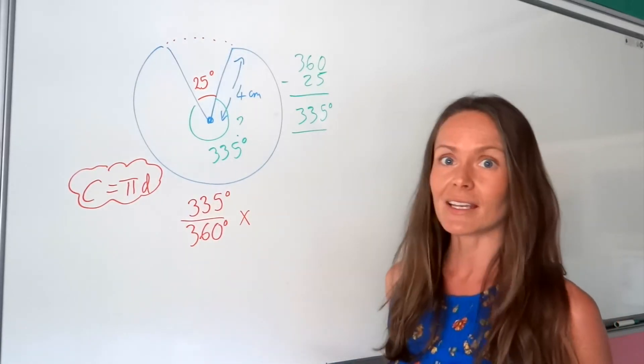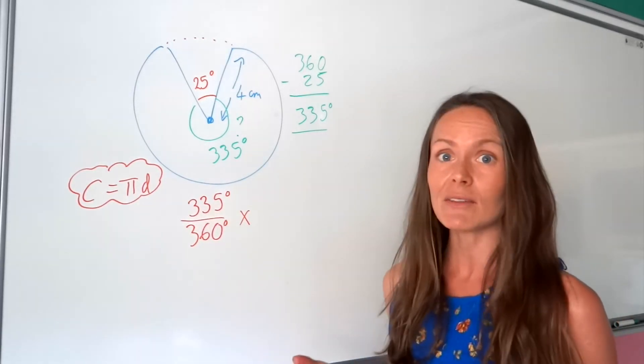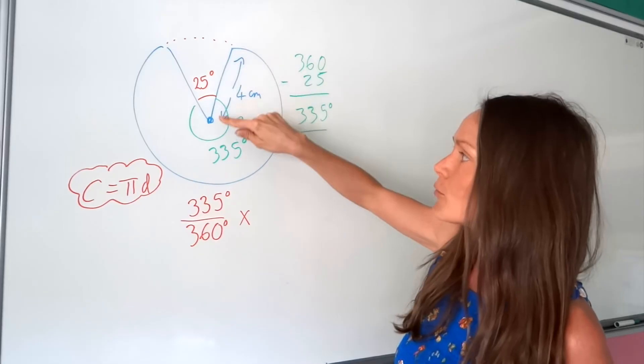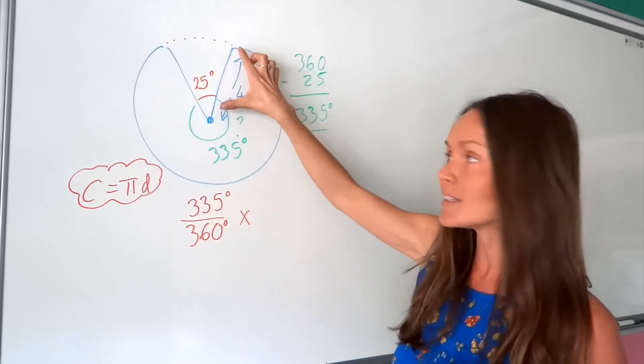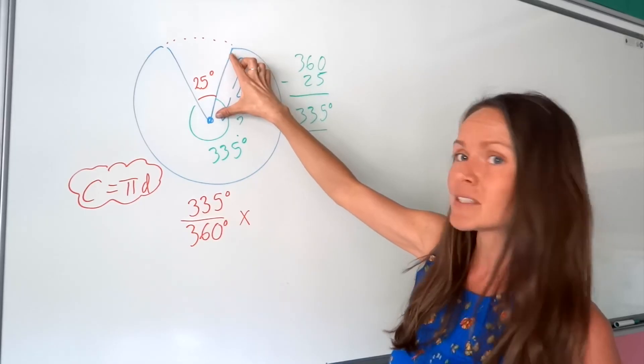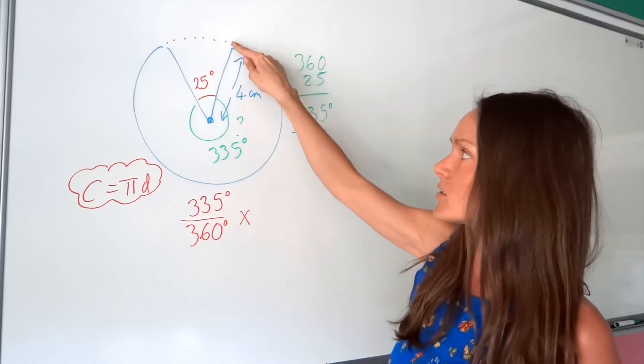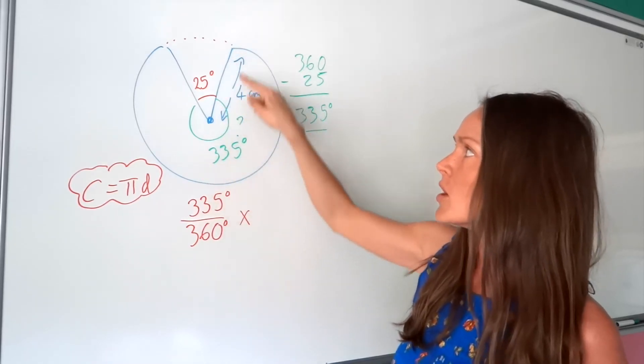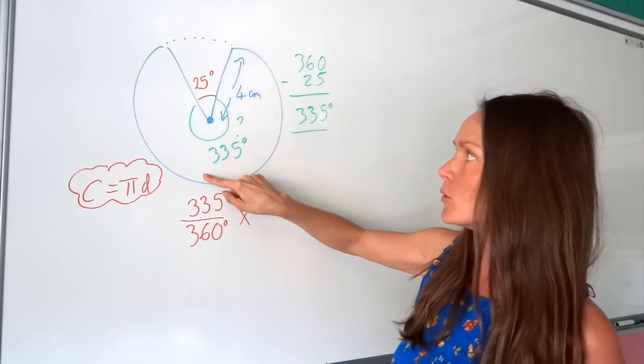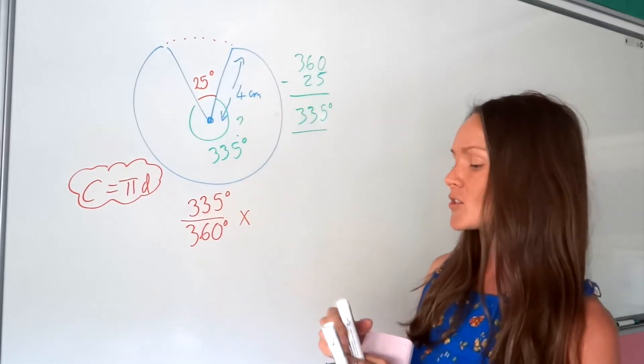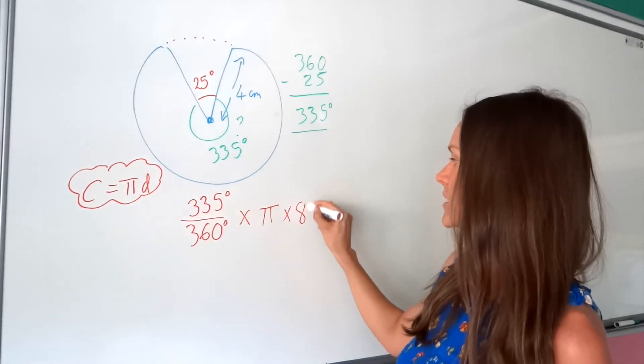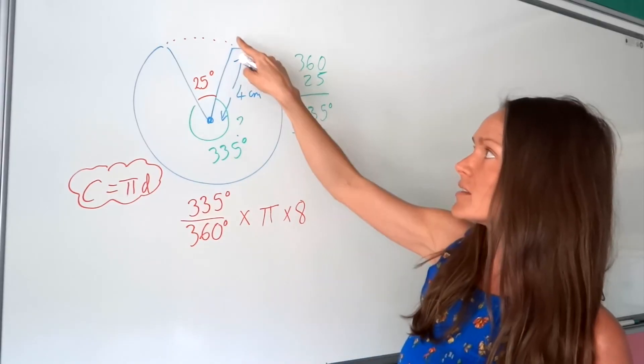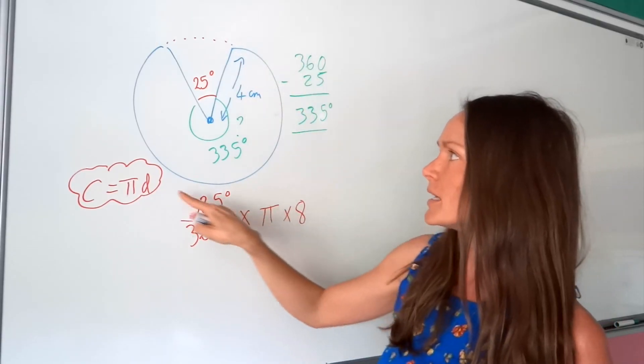But the diameter, just like in the last example, it hasn't been given to us. We've been given the radius of what would be this whole circle. So the radius is here and the diameter is double the radius. It's the distance all the way across the circle. So if that's 4 and that's 4, the diameter must be 8. So we have to multiply by pi and then also 8, which is the diameter. So that will give us this big curved part here, that side of the sector.